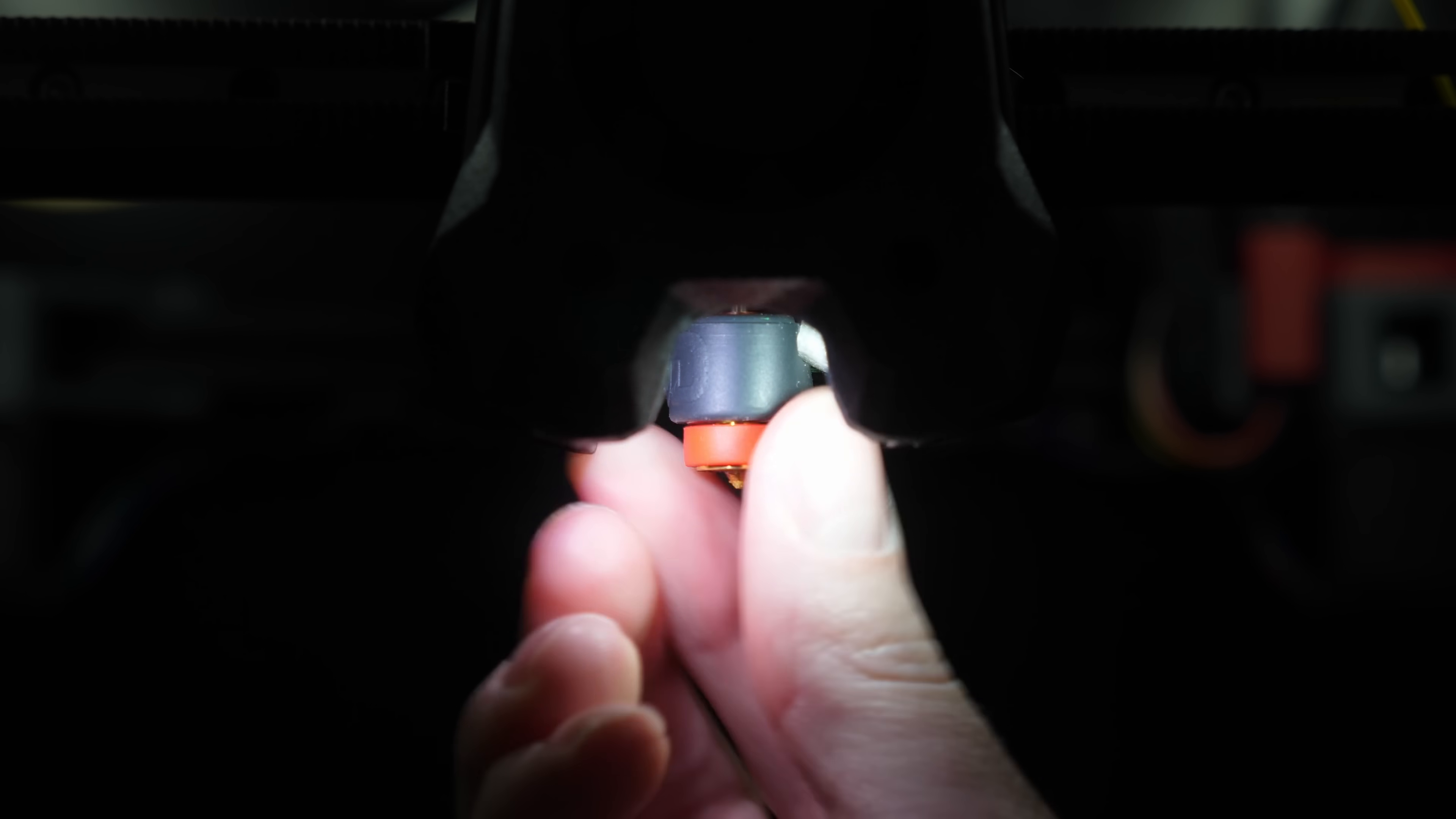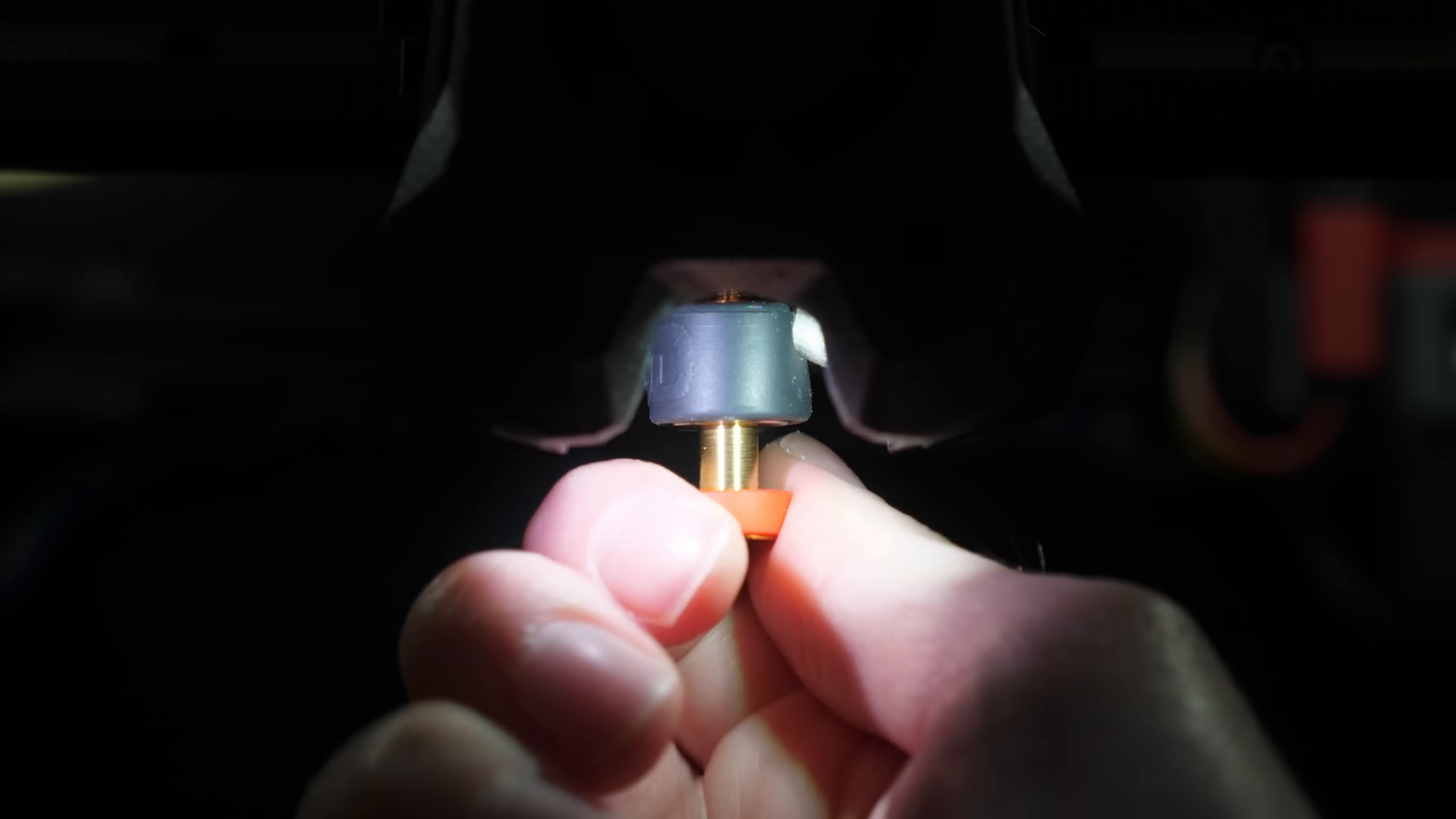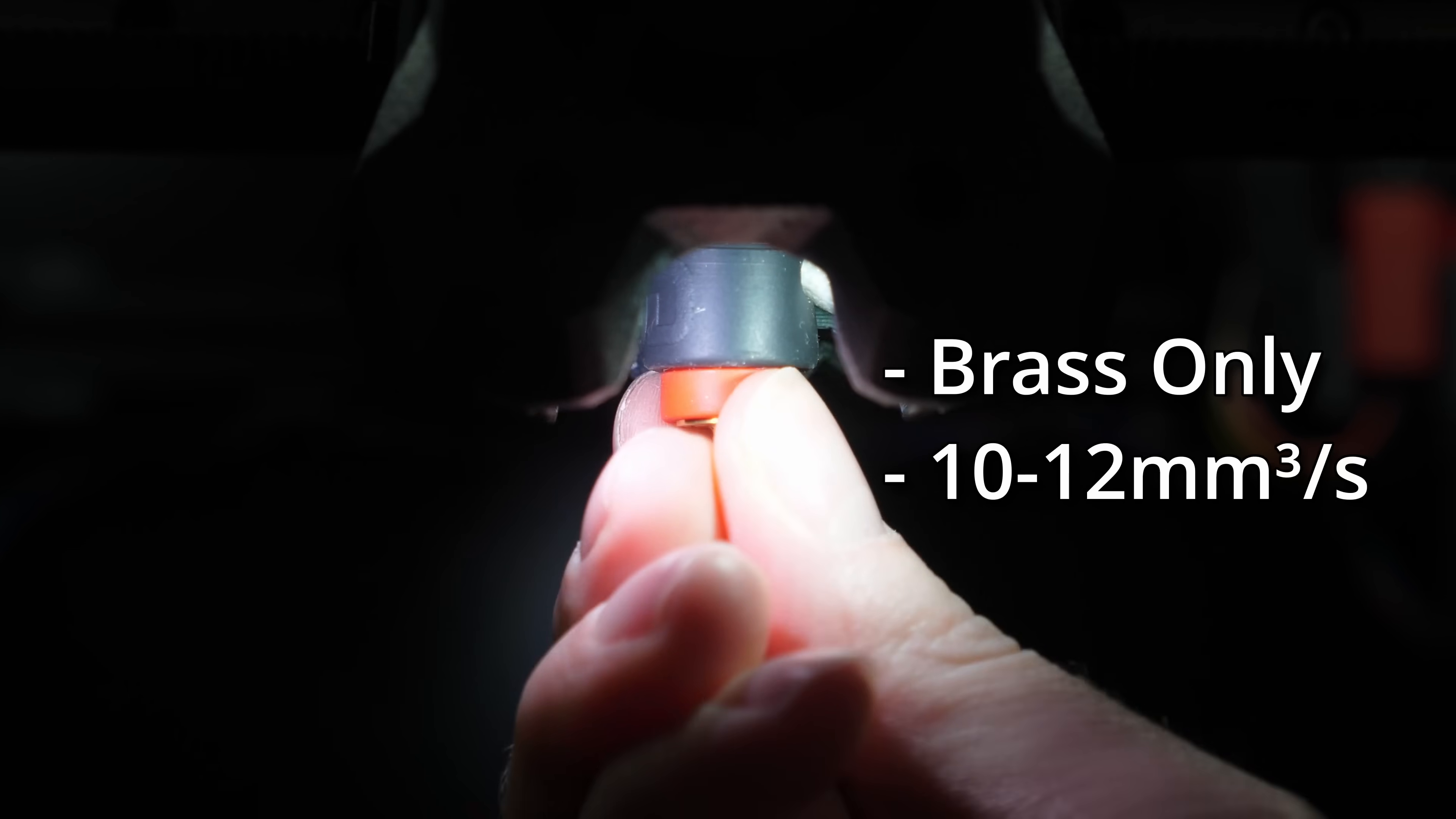E3D's Revo range is a hotend ecosystem designed to make it easier to swap nozzles. Just screw in with your fingers and you're done. Standard Revo had two problems in my opinion though: lack of support for abrasive materials and a quite limited flow rate capability compared to other options.